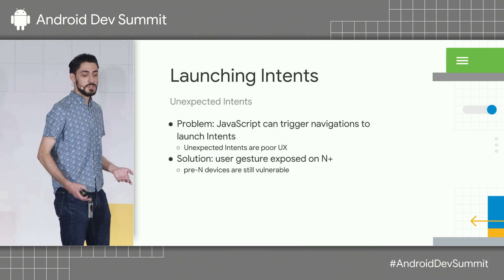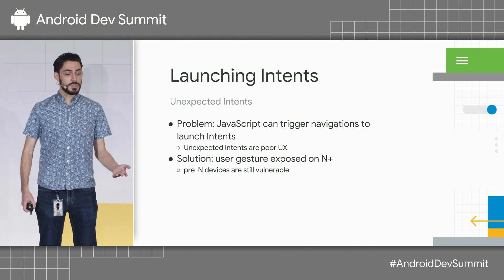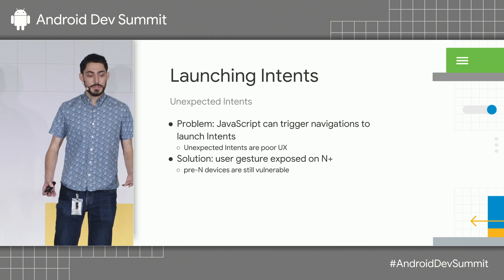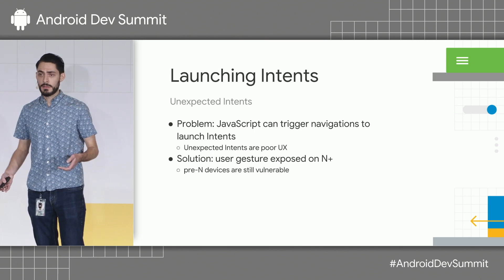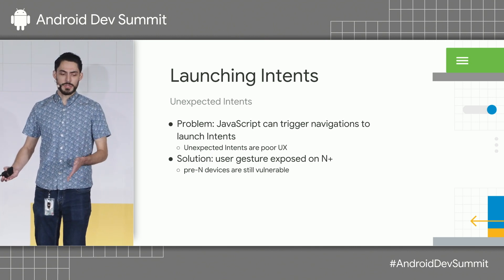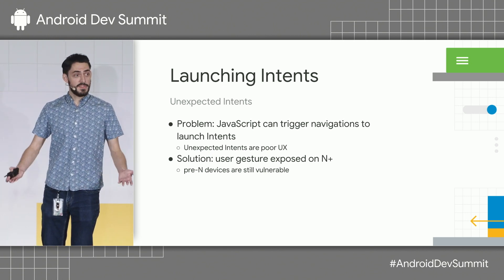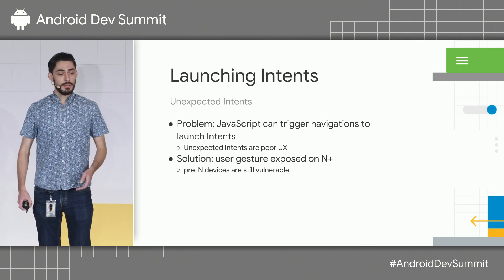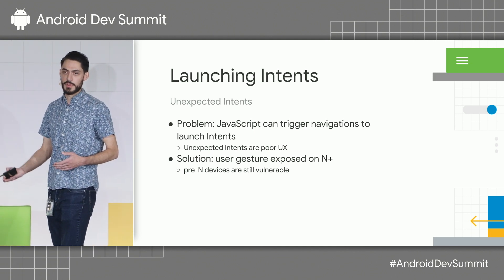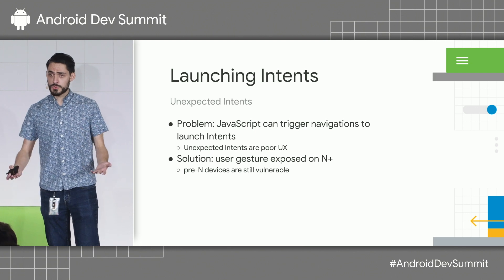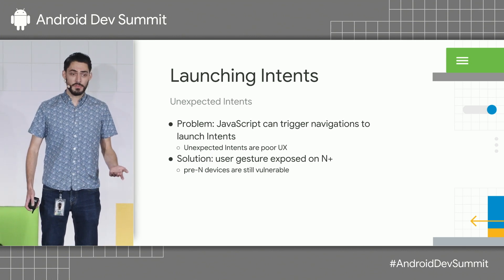The issue is that JavaScript can trigger navigations. There's some malicious JavaScript out in the wild that actually tries to exploit this app behavior. From the user's perspective, they might be reading some web content, and all of a sudden, without their interaction, it starts opening up some new Android app they're not trying to open. We fixed this back in Nougat by exposing the notion of user gesture — did the user actually trigger this navigation? — but it only works on Nougat and above devices, leaving pre-Nougat devices still vulnerable.